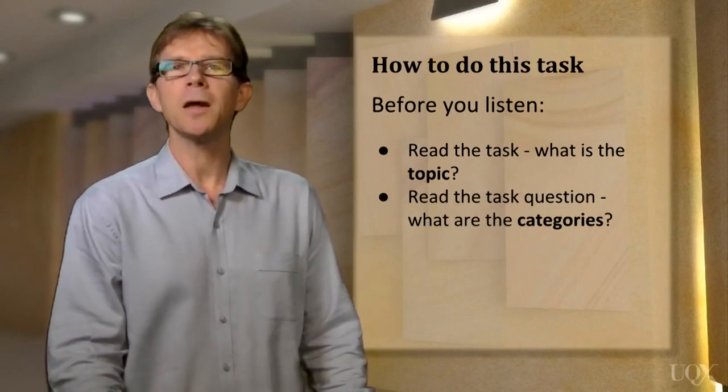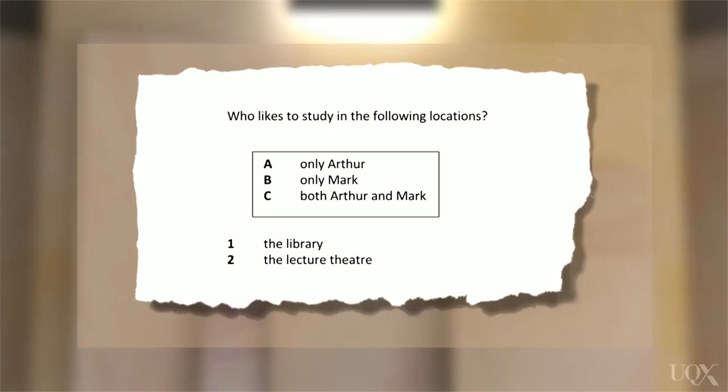Let's look at another example. You can see here that the task question is, who likes to study in the following locations? And the word who refers to the categories, which are the names of people.